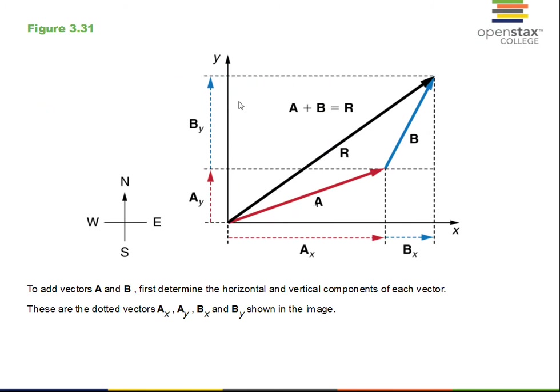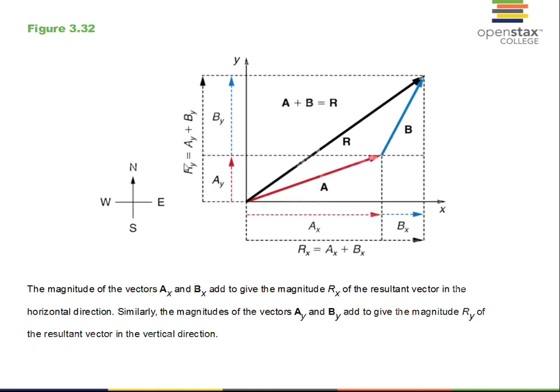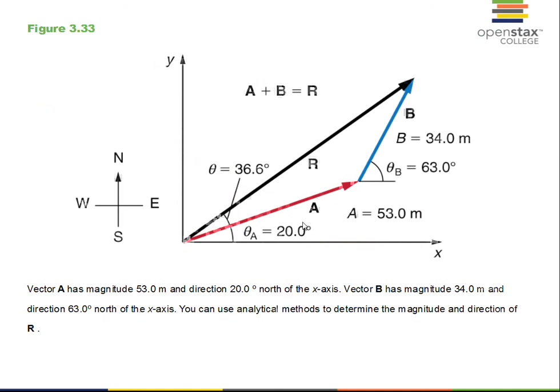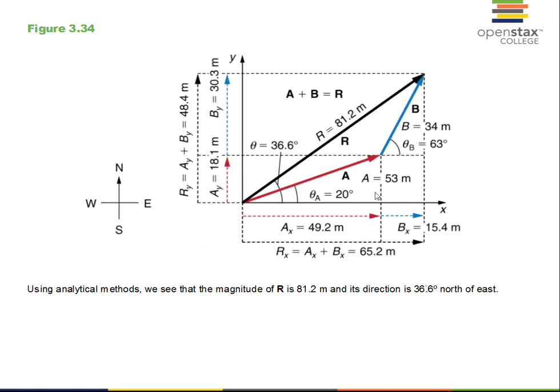We work separately in the x direction and the y direction. Rx equals Ax plus Bx; Ry equals Ay plus By. Here's a particular example: A has a length of 53 meters at 20 degrees from the x-axis; B is 34 meters at 63 degrees from the x-axis. The mathematical method is better than head-to-tail, so we find their components.